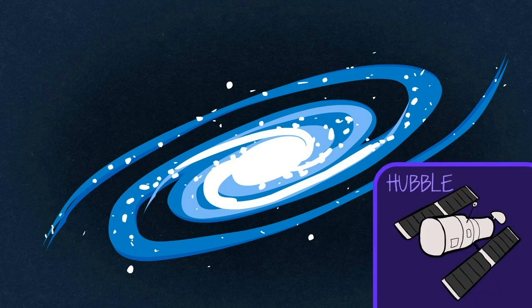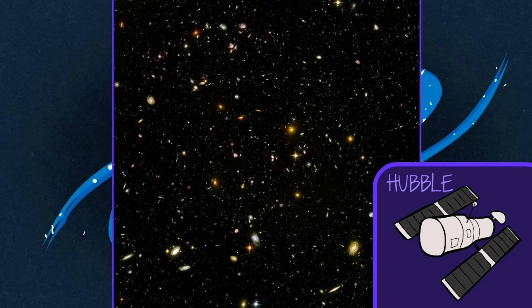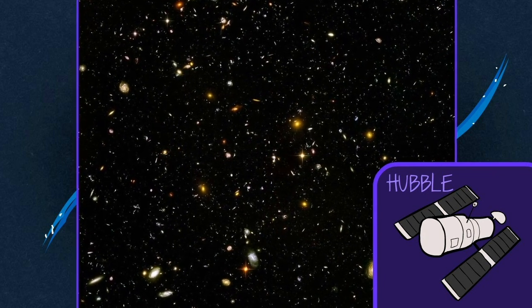In the 90s, the Hubble telescope, while focusing on a little space in the sky that seemed empty, was able to take this photograph. Each sparkling spot is a galaxy, with its own stars and planets.